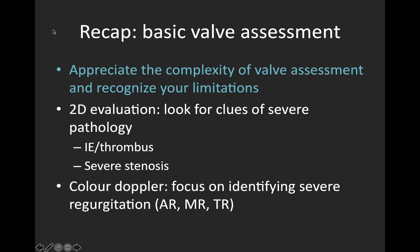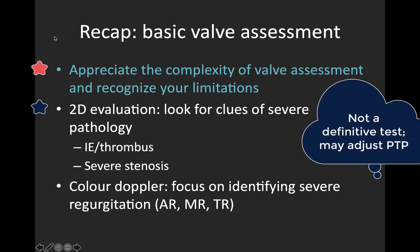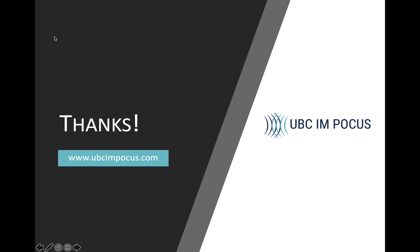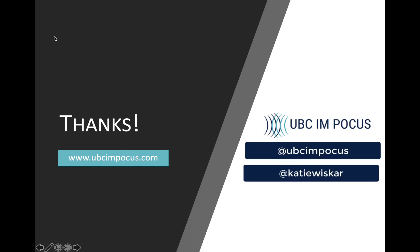Let's recap the highlights. First and foremost, be aware that valve evaluation is a complex topic and it's easy to go wrong if you're not aware of common pitfalls and your own limitations. There are two primary things we can look for at a basic POCUS level: first, using two-dimensional clips to look for clues to severe disease such as endocarditis or severe stenosis — recognizing that basic POCUS is not a definitive test, but may help adjust your pretest probability. A normal appearing valve is very useful to help rule out severe stenosis. Second, use color Doppler to identify severe regurgitant lesions, specifically AR, MR, and TR. Thanks so much for joining — be sure to check out ubcimpocus.com for more screencasts, and happy scanning!